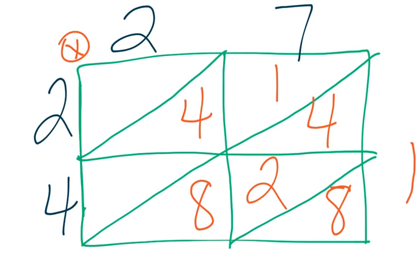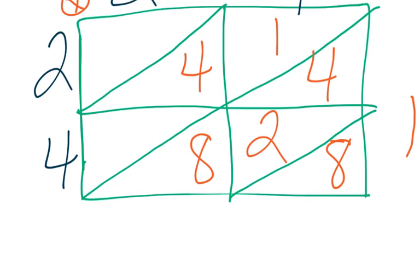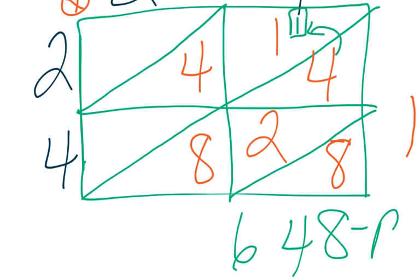Then you know we add going down. This is 8. 8, 2, and 4 is going to be 14. I'm going to regroup 1 right up to here. So now I add 1, 1, and 4 to get 6. 648 is my product.